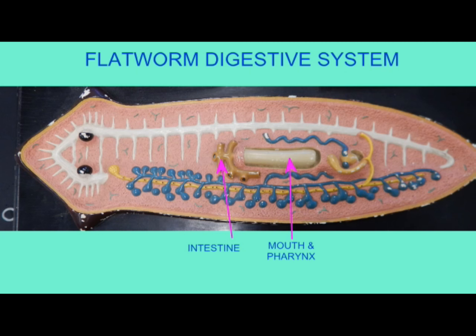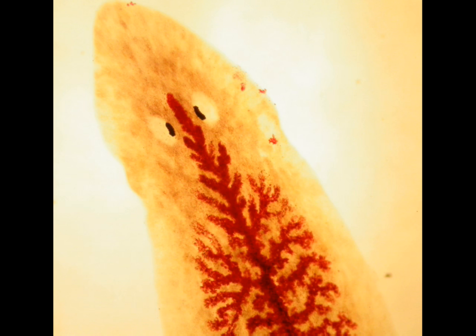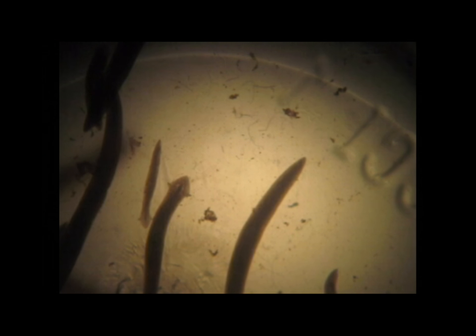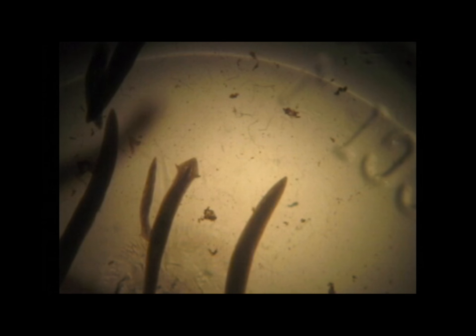You should be able to describe a flatworm's digestive system. The mouth is located in the center of the body and it's incomplete — the same opening serves as the anus. Since there are no blood vessels, the intestines are branched because they take on the role of distributing materials throughout the body.